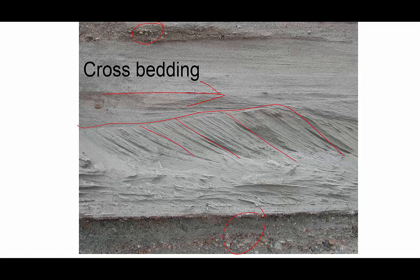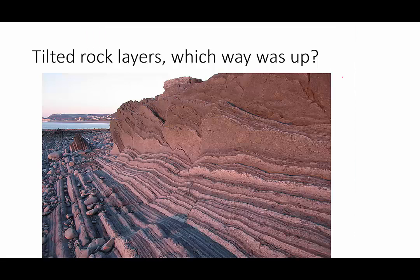I can also tell that this rock layer is in the upright position — this is up. Determining which way is up may not always be obvious, because although rock layers are originally horizontal, tectonic forces can cause rock layers to tilt. They may tilt so much that they've become overturned. So how do we know which was originally the top of the layer?